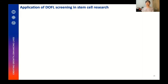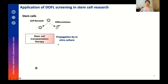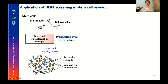Let me share with you some stem cell probe work I've done. Stem cells can differentiate into specialized cells like neurons, keratinocytes, or muscle cells, while maintaining their population by self-renewal. For stem cell transplantation therapy, a sufficient number of cells is required, so they are propagated by in vitro culture. However, quality control is as important as increasing quantity, because in vitro culture doesn't always provide only high-quality stem cells that retain both properties.